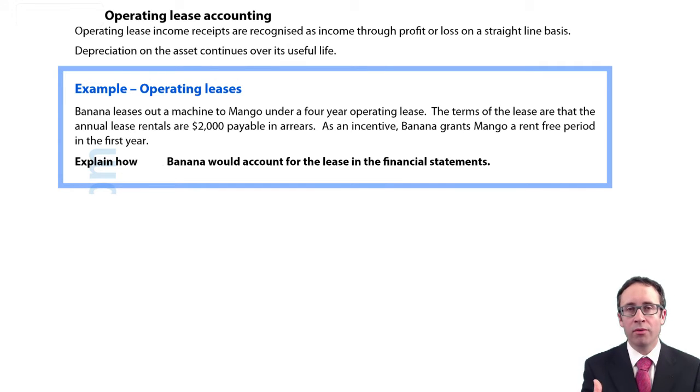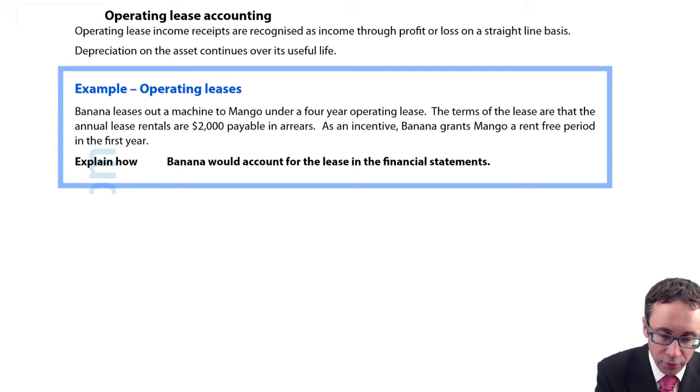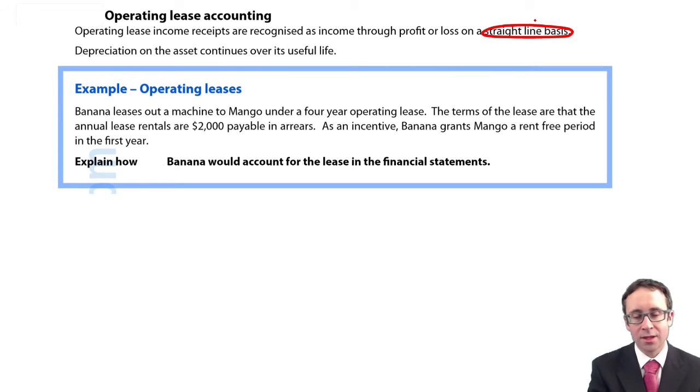Remember if we have an operating lease, that is any lease that is not a finance lease, and therefore the risks and rewards have not been transferred to the lessee. The lessor still has the risks and rewards of ownership. So the accounting treatment is straightforward: we recognize the income through profit or loss on a straight line basis, and the depreciation continues over the asset's useful life as normal.